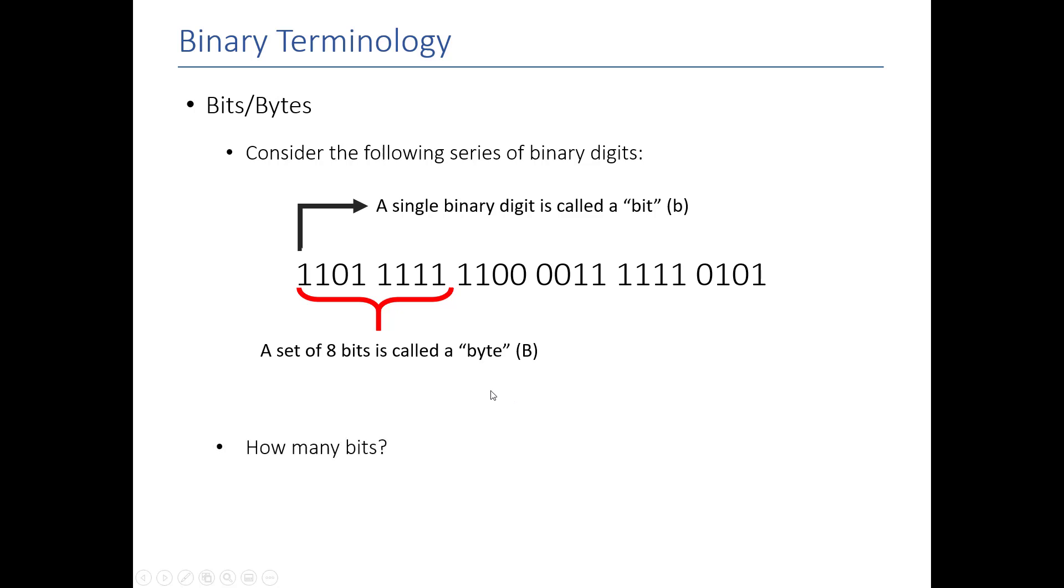So, in this particular example, let's look at how many bits there are. One, two, three, four, and there are six groups of four, so that should be 24 bits. And then, if I look at how many bytes there are, there are three groups of eight bits. So, that should be three bytes. So, the magic number in this case is eight. Remember that there are eight bits in a byte. You should be good to go.